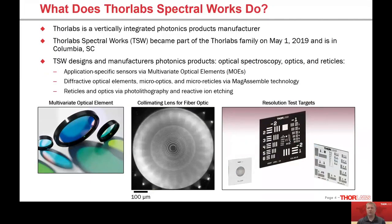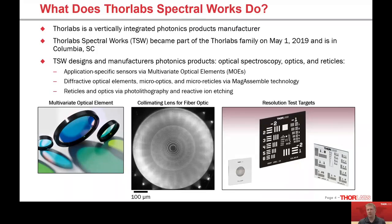Thorlab Spectral Works is part of Thorlabs, a vertically integrated photonics products manufacturer. We are located in Columbia, South Carolina, and we entered the organization when we were acquired — we were formerly Certimo. We produce a variety of photonics-based products at TSW: application-specific sensors via the multivariate optical element platform, diffractive optical elements, micro-optics, micro-reticles via our mag-assemble technology, as well as traditional reticles and optics using photolithography and reactive etching, as you can see in the lower portion of the screen.